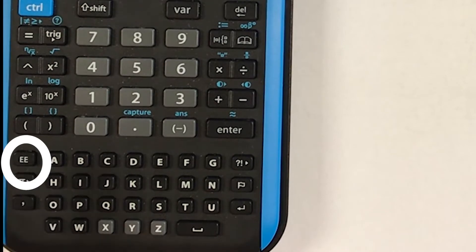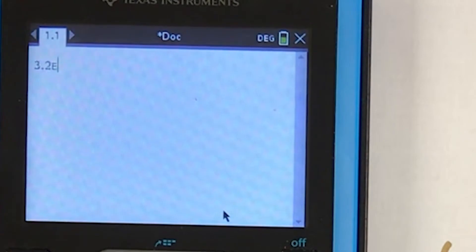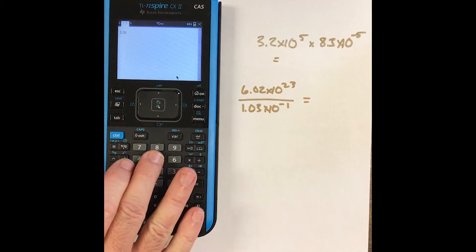Down here we have this double E button. So watch what I push. I push the E button. It prints, as you can see there, E. Now E means times 10 to the power, and I just say E5.